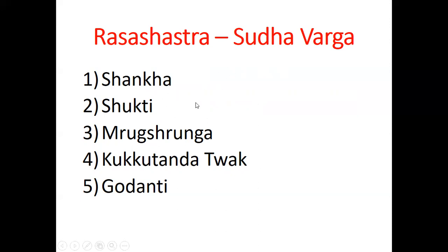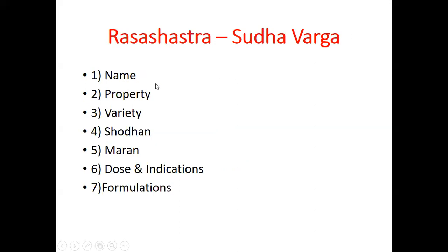It may be a case of Asthikshaya, that is a deficiency of osseous tissue in your body. Osteopenia is there, osteoporosis is there, osteoarthritis is there. Bone density will be less. Nowadays there is a trend that everybody wants to know about bone density, so when bone density is less, you must use this Sudha Varga. We will discuss about name, properties, varieties, Shodhana, Marana, dose, indications, and formulations.